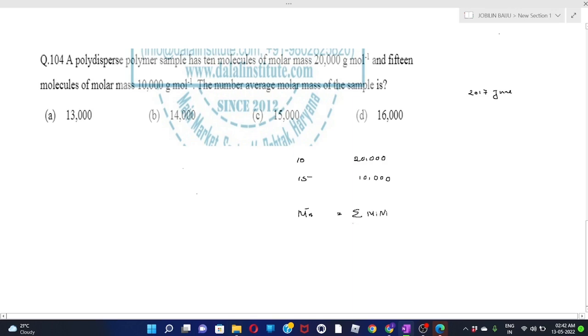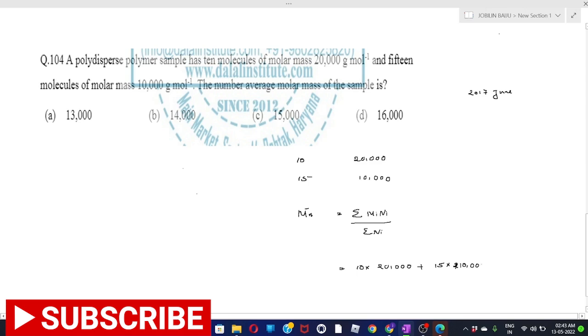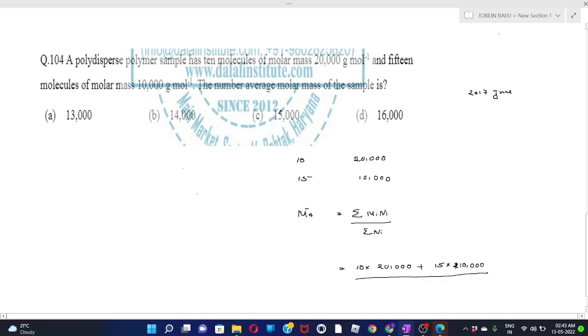The number average molecular mass MN is Sigma NI MI divided by Sigma NI. So in the numerator you will be having 10 multiplied with 20,000 plus 15 multiplied with 10,000, divided by denominator 10 plus 15. You just have to add both 10 and 15. If you divide with 25 you will get 14,000. According to this, correct answer is option B.